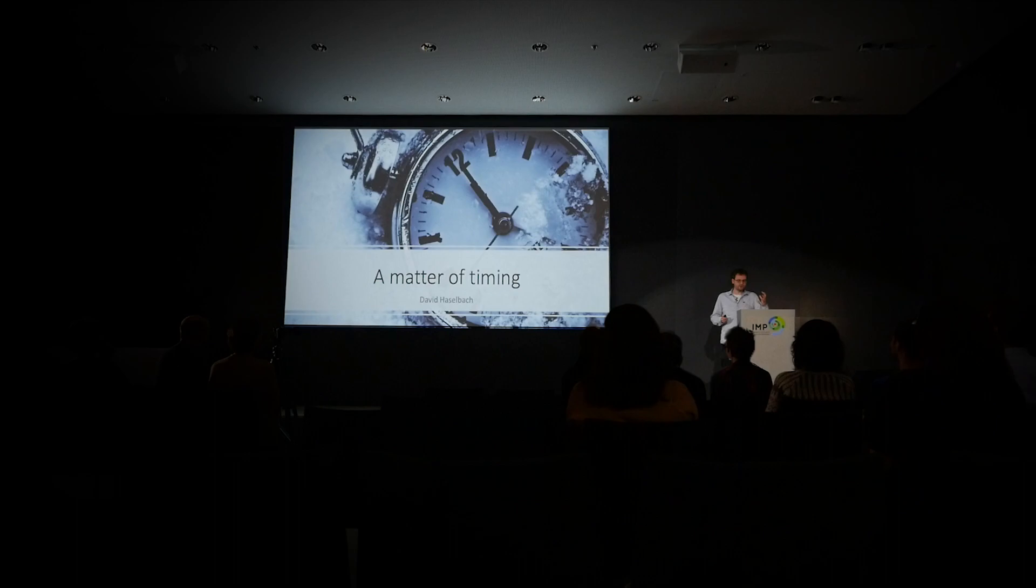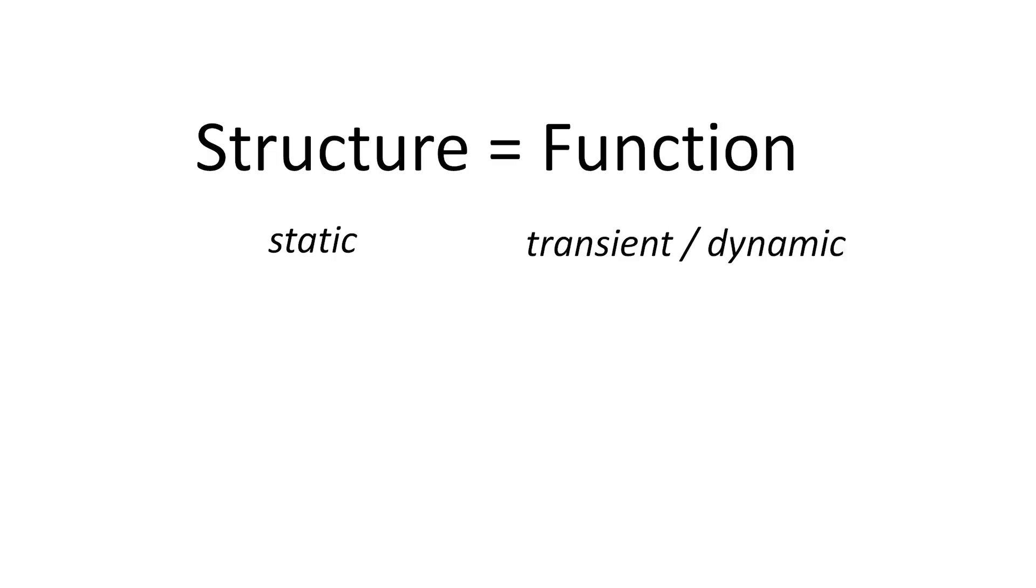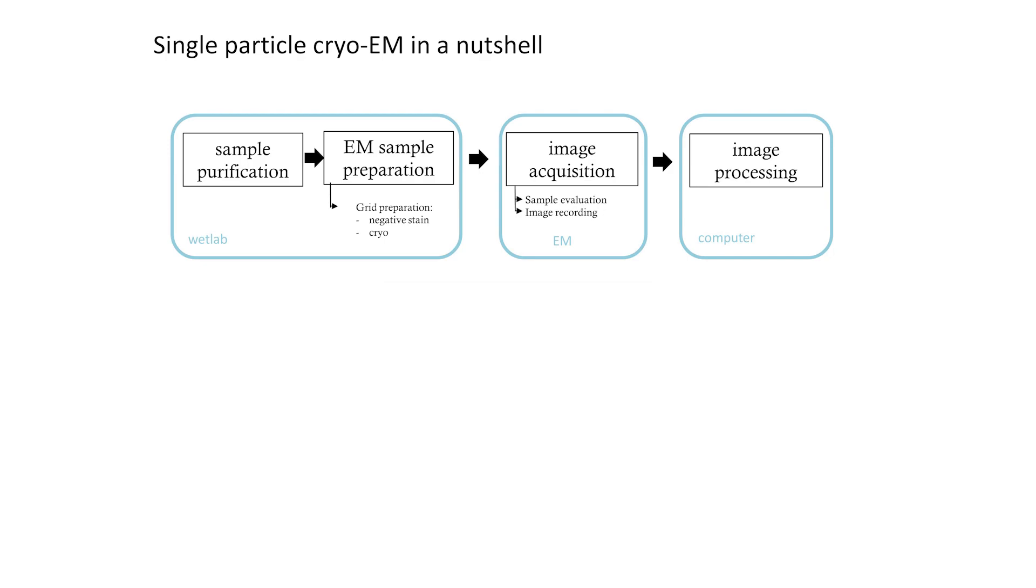To do so we do structural biology. Our mantra as structural biologists is structure equals function. So we can infer function from structure. This seems to be odd if you think about it because structure is static. Structure gives you the coordinates of atoms in a molecule in relation to each other. However function is transient. This is something that changes with time. Whatever molecule or machine you would imagine will always have some kind of change in time. So we have to understand the machine not only understand the structure but also understand the change in time. So let's define function now as the change in structure with time.